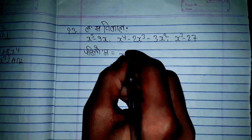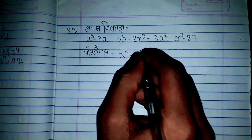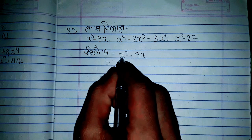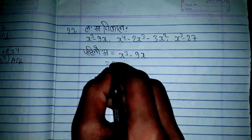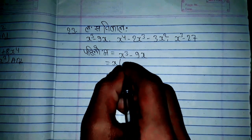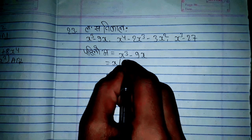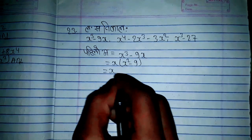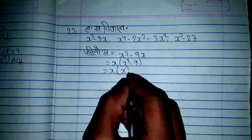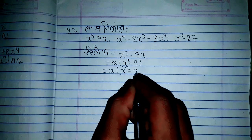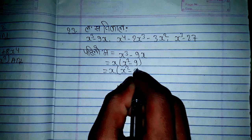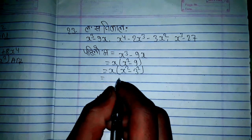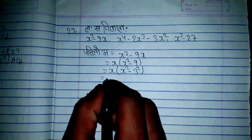First, I will write x³ minus 3x, and we will write x minus 2x. Now we have 3x² minus 9x.